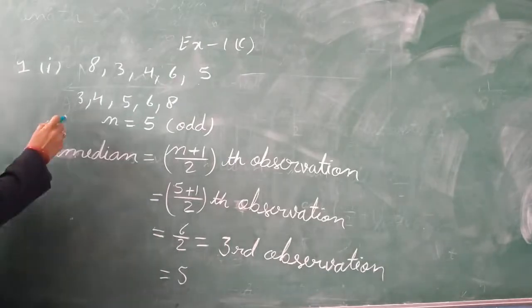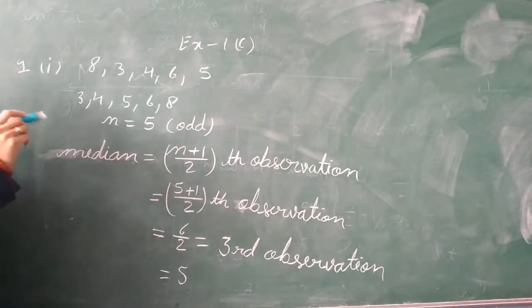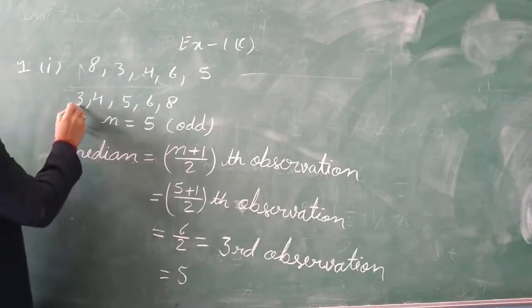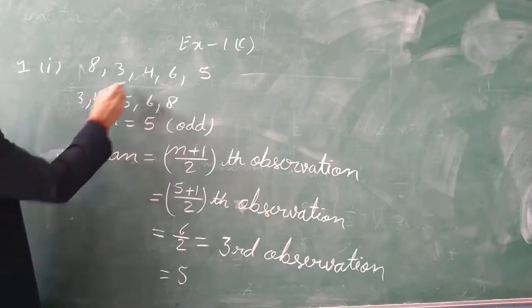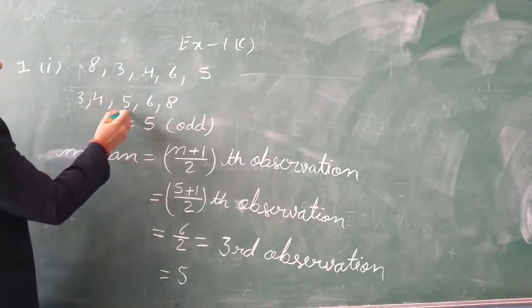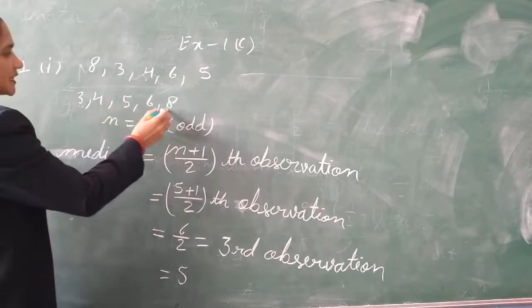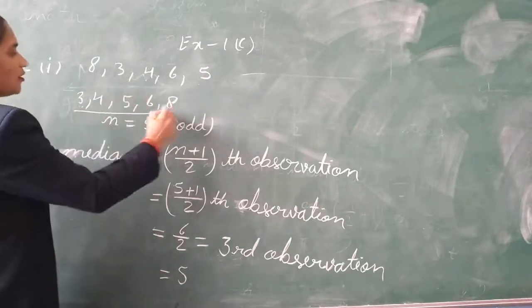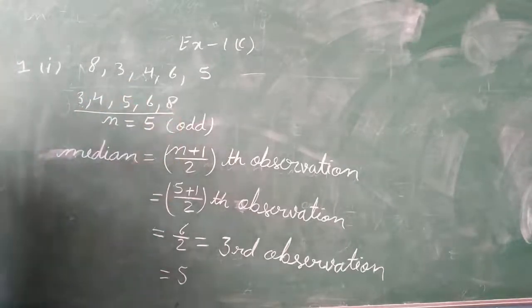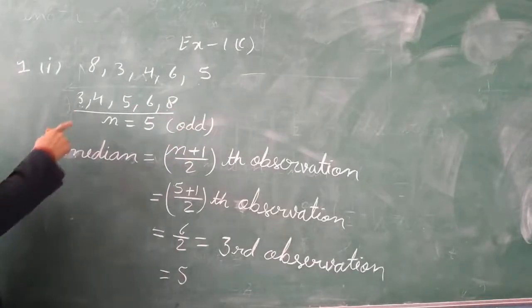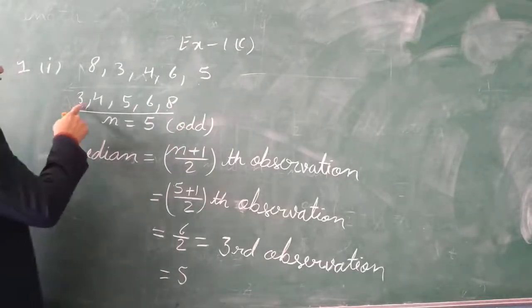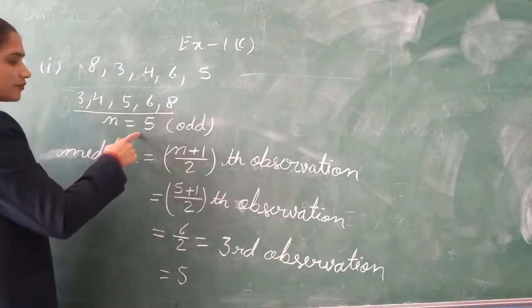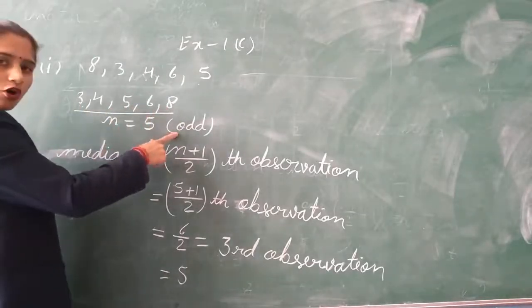First we will arrange these in ascending order. Ascending order means smallest first, so that is: 3, 4, 5, 6, 8. Now these are in ascending order. How many observations are here? 1, 2, 3, 4, 5 — that is 5 observations.